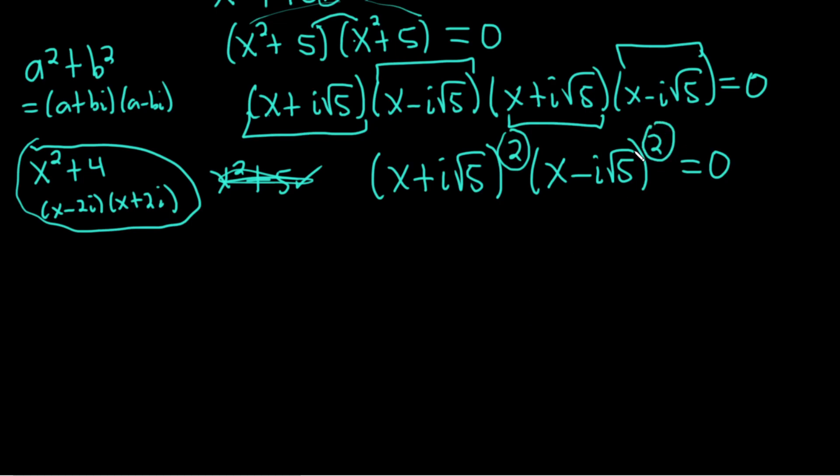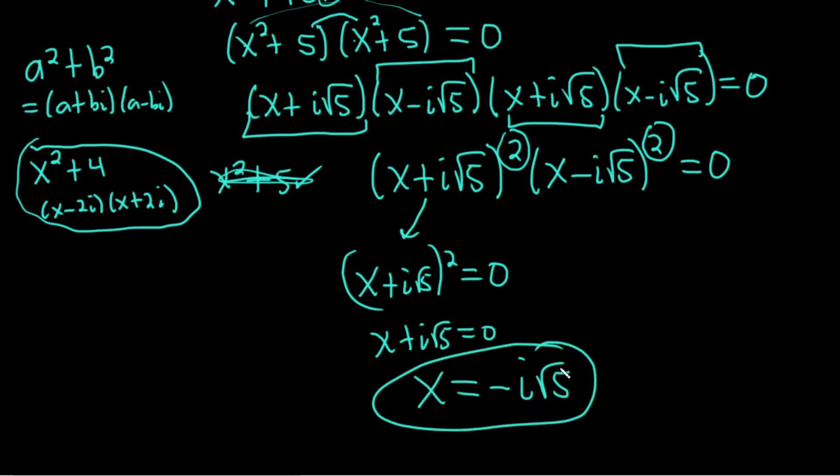So they both have multiplicity 2. And this one here, if you set this equal to 0, the 2 goes away because you can just take the square root of both sides, set this equal to 0, and you get our first 0. So negative i root 5. That's the first one. And the multiplicity is 2. You notice that if we hadn't grouped them together, you would have gotten the multiplicity incorrect. So to find the multiplicity, you want to group everything together. It's very important.